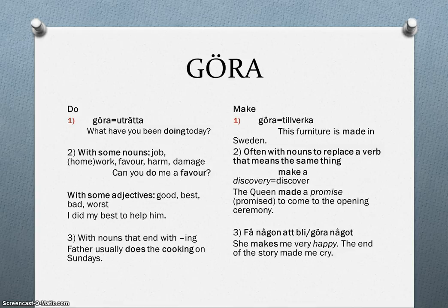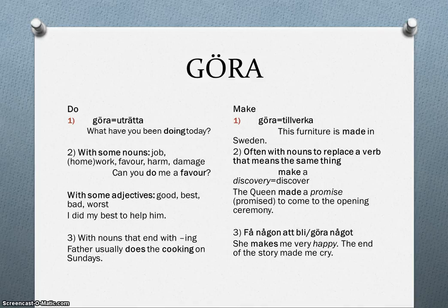The second major verb you use when you want to explain something that you do is 'make'. You use 'make' if you talk about something that is created — for example, 'this furniture is made in Sweden.' You also use 'make' often with nouns to replace a verb that means the same thing, for example, 'make a discovery' could replace the verb 'discover', or 'the queen made a promise' replaces the verb 'promise' to come to the opening ceremony.